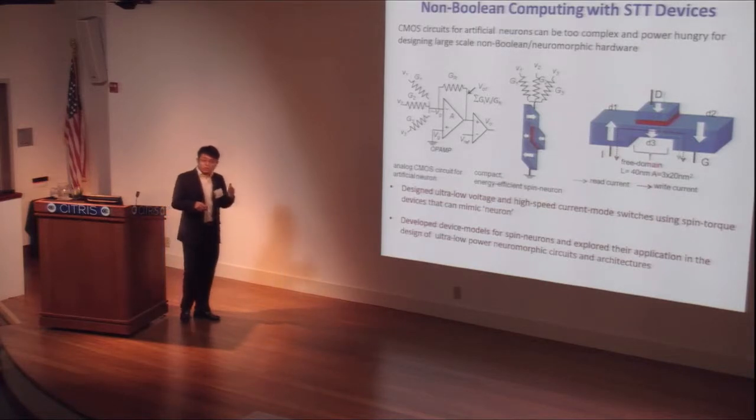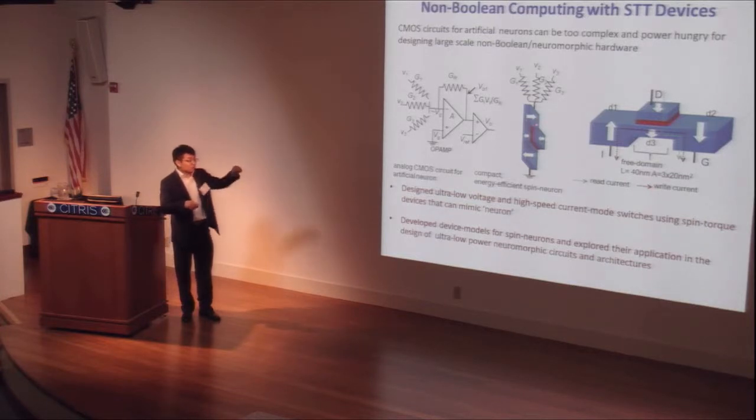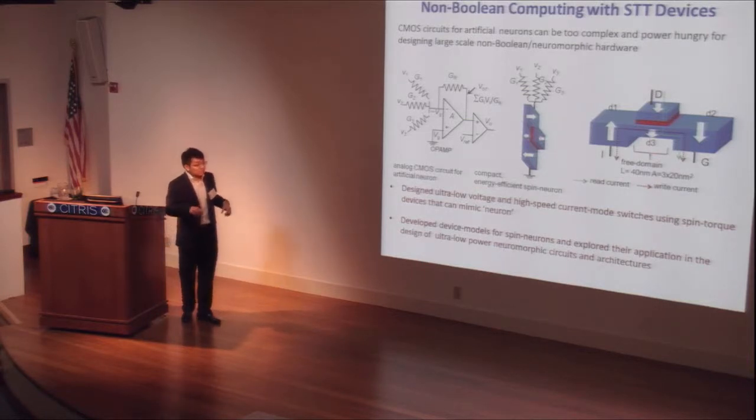Basically, it's a domain-wall-based neuron. A domain-wall magnet consists of several magnets separated by a non-magnetic wall. We call it a domain-wall. This domain-wall can be moved by application of a current, a charge current along this nanostrip. If you just see the position of this domain-wall magnet, if the domain-wall is moved, the spin-polarity of this free domain will flip. We can use this MTJ to sense the state of this free domain. So this is the structure of the domain-wall magnet neuron.